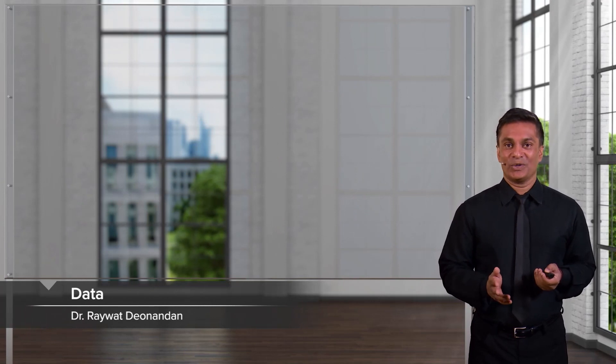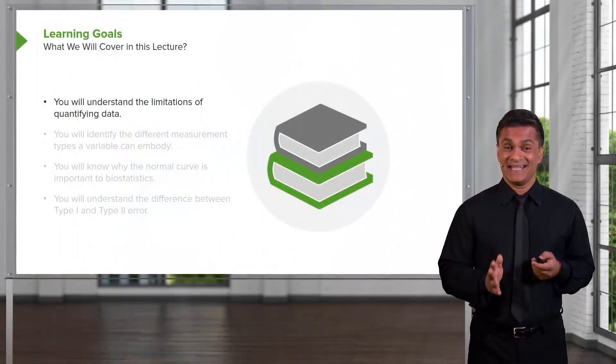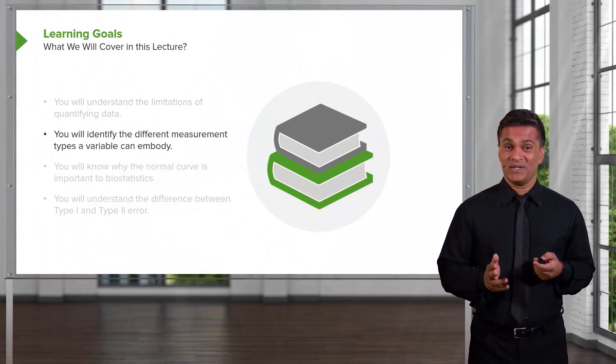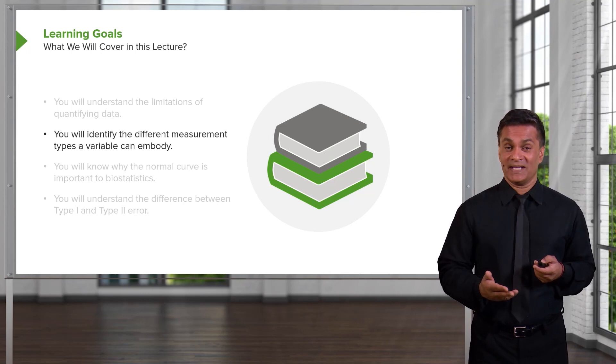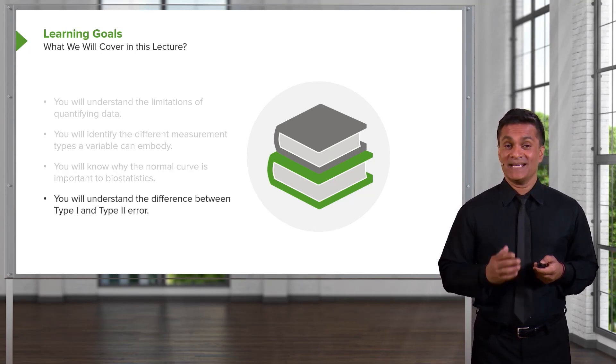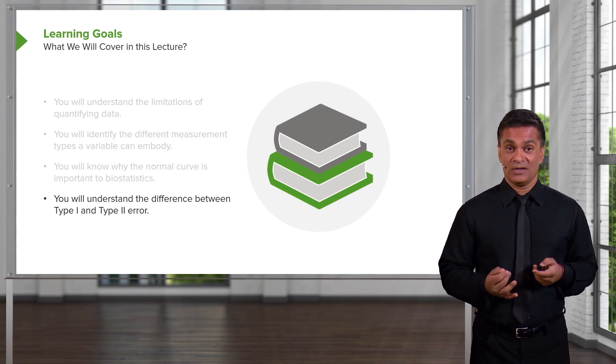So today we're going to learn about data and data analysis and some of the concepts underlying data. After today's lecture, you're going to understand the limitations of quantifying data, be able to identify the different types of measurement that a variable can embody, know why the normal curve is important in statistics, and understand the difference between type 1 and type 2 error, also a fundamentally important concept in statistics and data analysis.